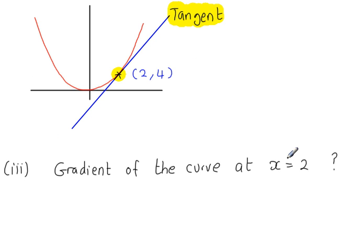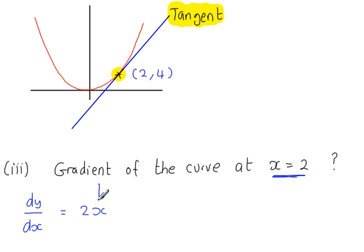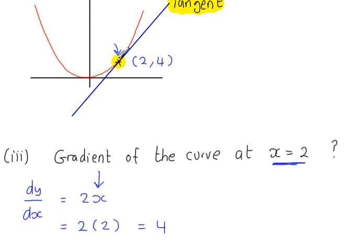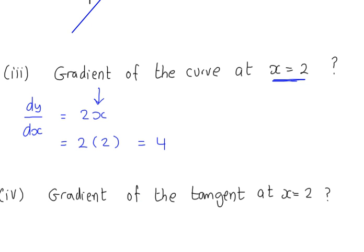So what is the gradient of the curve at this point, when x is equal to 2? We know that dy/dx equals 2x, so we substitute in the x value into our derivative. We get 2 times 2, which is 4. So the gradient of the curve right here is equal to 4. And the gradient of the tangent will be the same — so the gradient of the tangent when x equals 2 is also 4.